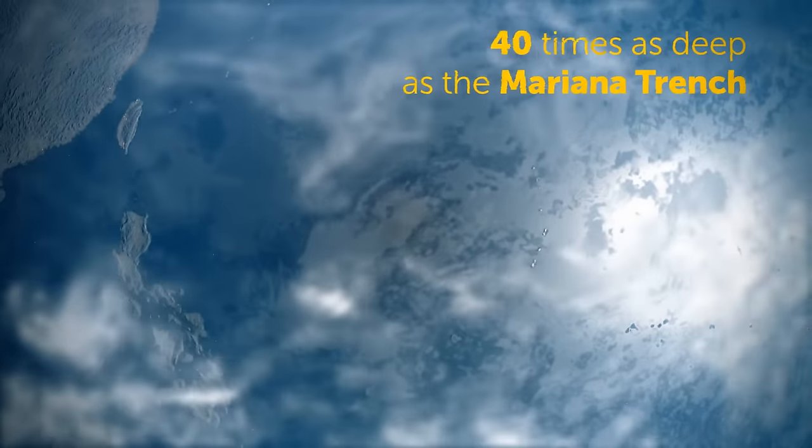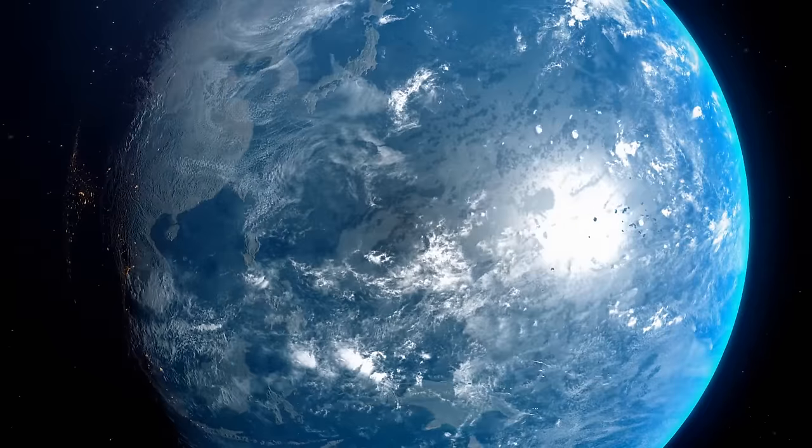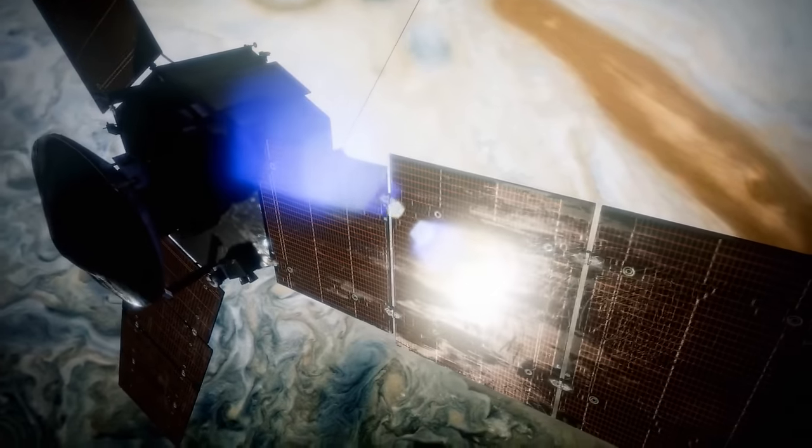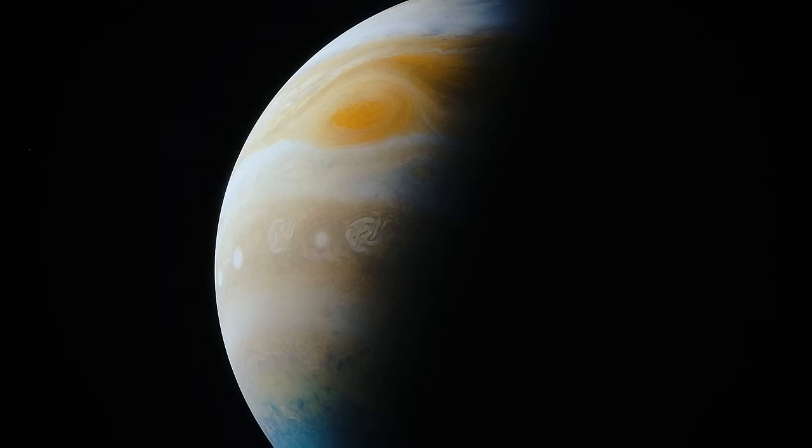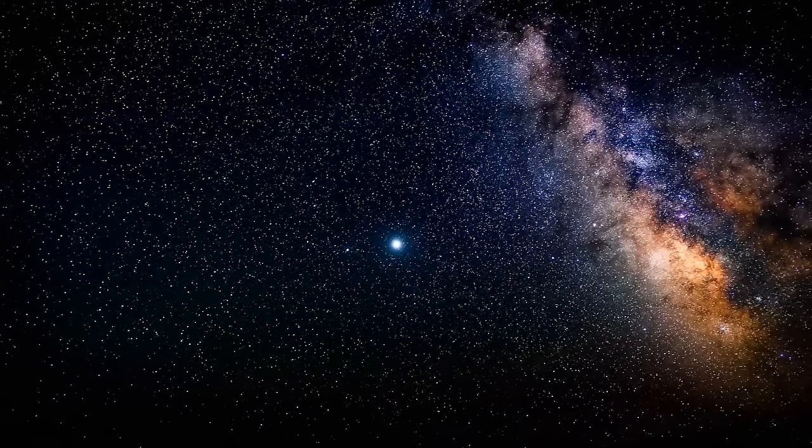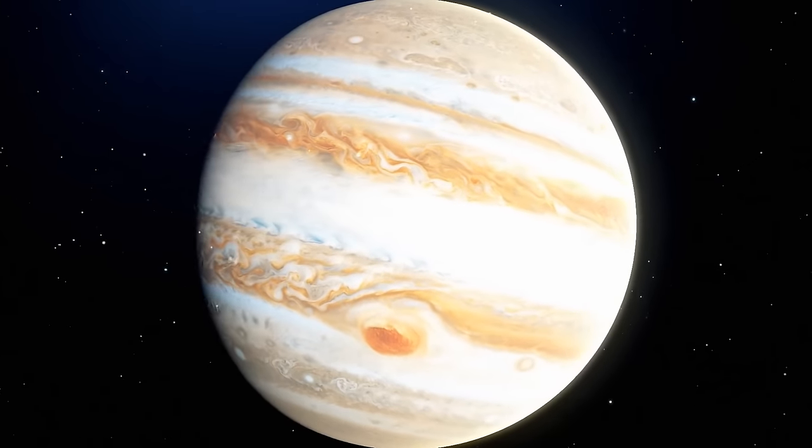That's 40 times as deep as the Mariana Trench, the deepest oceanic spot on Earth. Way more extensive than scientists expected. Researchers have speculated about the great red spot for hundreds of years already. This storm is circling Jupiter in its southern hemisphere.